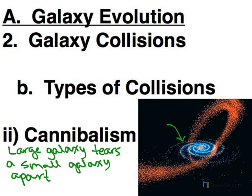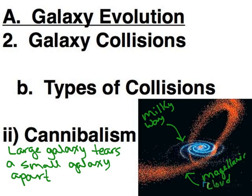Here is an artist's impression using computer graphics — here's the Milky Way, and this is what we are doing to one of our satellite galaxies. This is the Magellanic cloud — we are doing this to both. Both the large and small Magellanic clouds are little dwarf galaxies that orbit the Milky Way, and over time all those stars that are part of that galaxy are going to get sucked into the Milky Way and become part of our own galaxy.